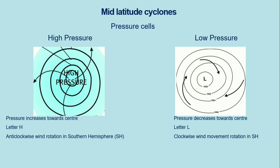Those are the key characteristics you need to understand about the two pressure cells, and you need to know the key difference between them — especially the low pressure one, because mid-latitude cyclones are associated with a low pressure cell. The pressure decreases towards the center, and this is because of air being lifted upward from within the cell.